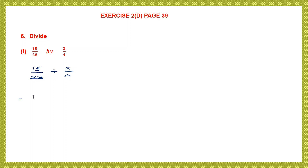When we do division of rational numbers, we write down the first rational number as it is — 15 by 28. Division changes into multiplication, and for the second rational number, 3 by 4, we write the reciprocal, or multiplicative inverse, which is 4 by 3.